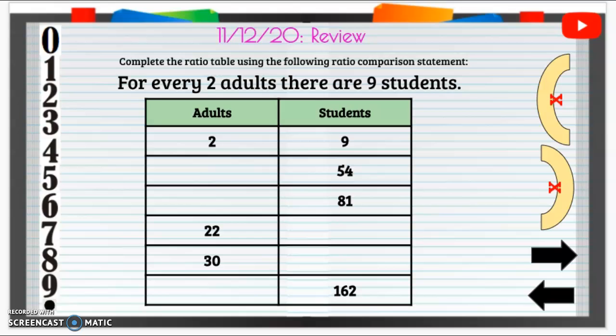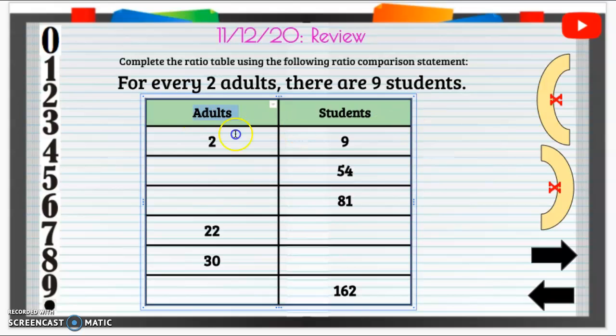This statement says for every two adults there are nine students. So we have two adults to nine students. For two adults there are nine students. Now we need to figure out how to fill out this table.